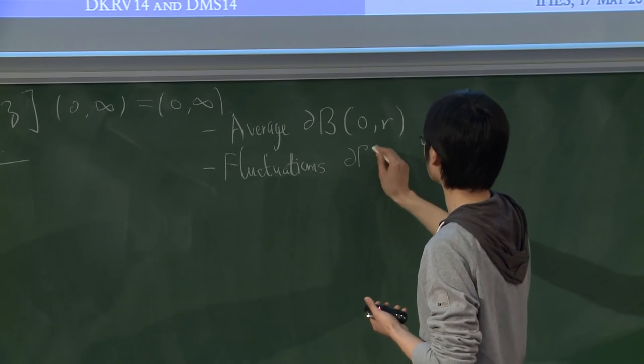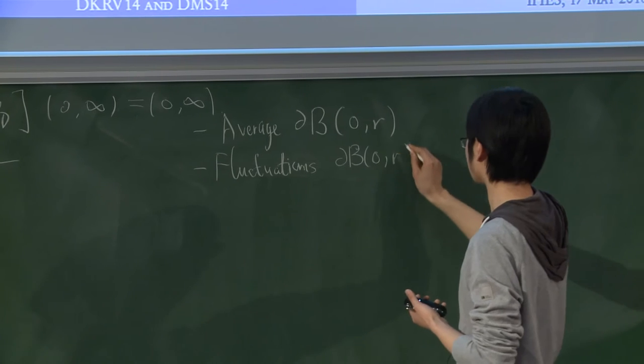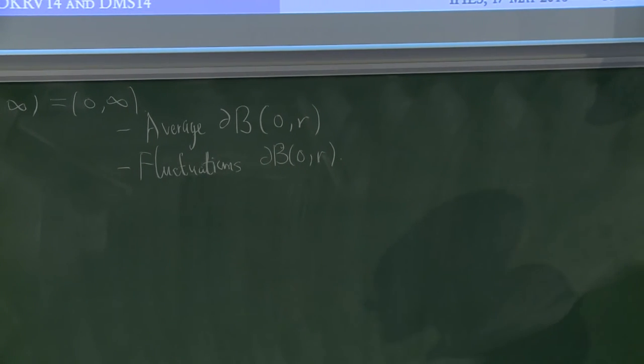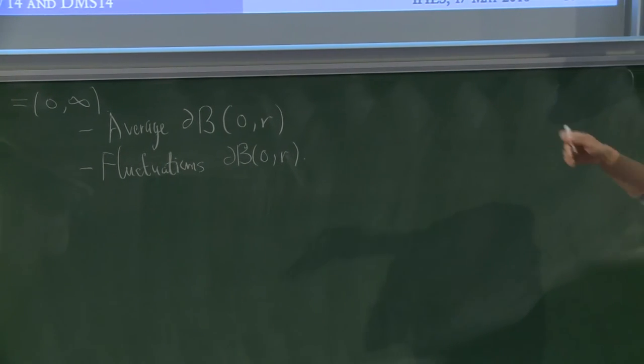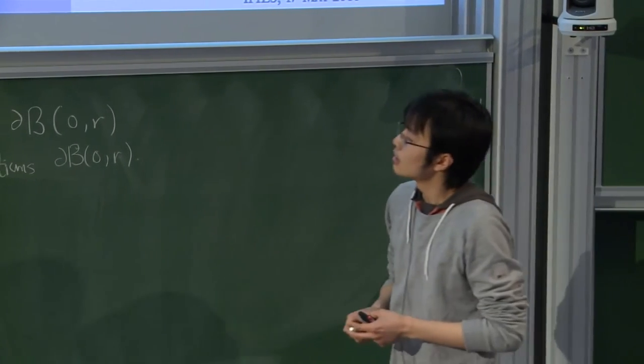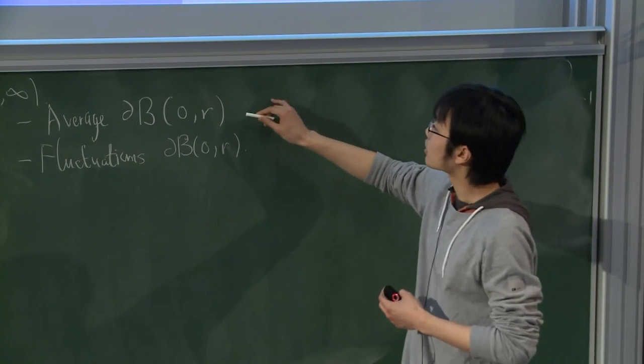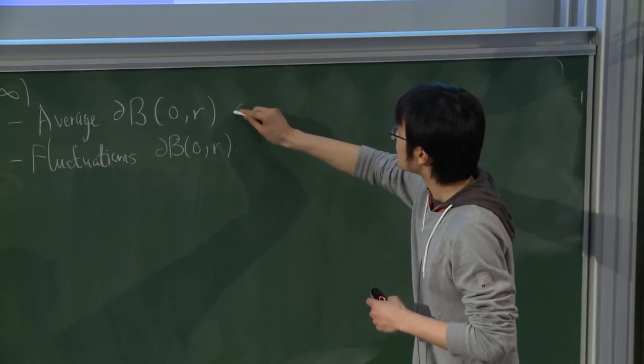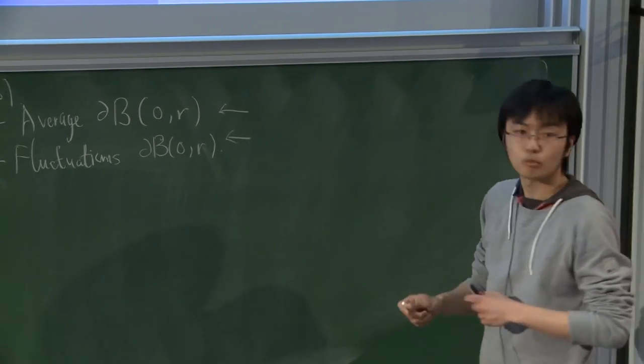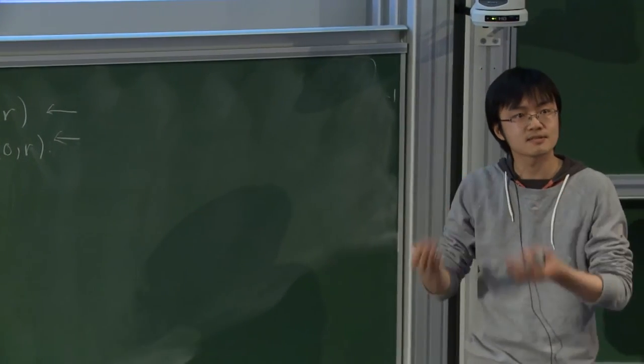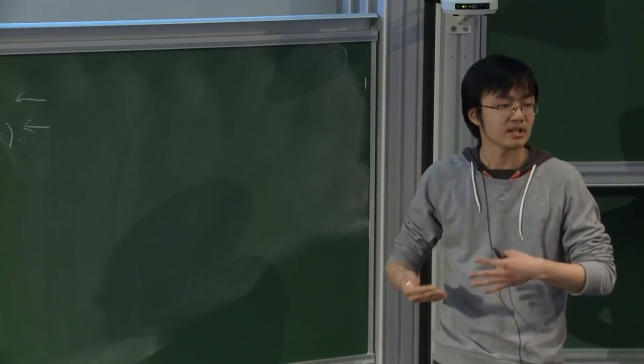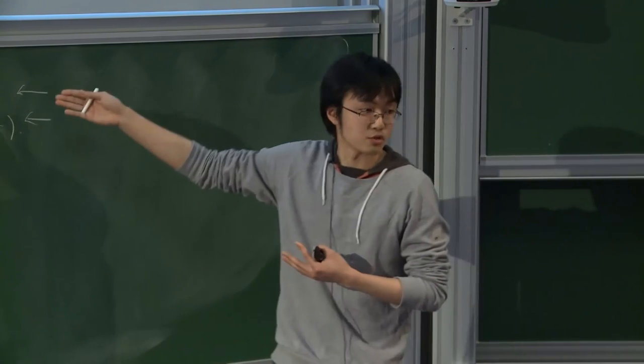If I only tell you the average of a function on each one of the circles, you don't know much about this function. If you want to know entirely the function, you must add fluctuations of this function on every one of these circles. So if you combine these two parts, you will get your function or distribution.